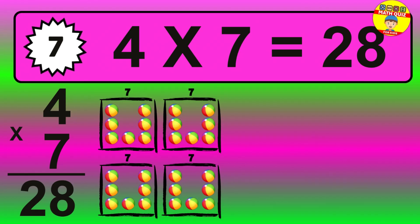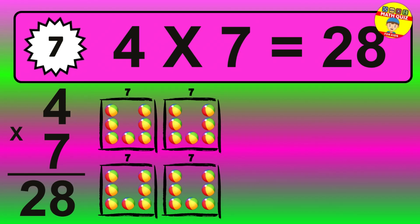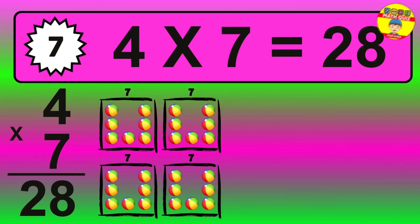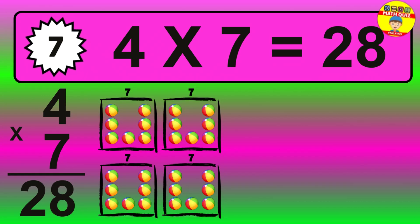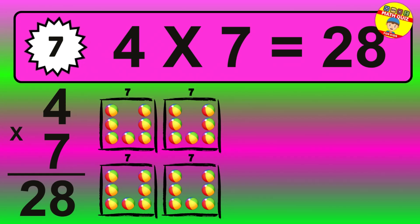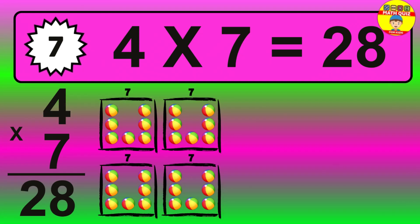Question 7. 4 times 7 equals what? The answer is 4 times 7 is 28. To calculate, we have 4 groups with 7 balls each one. So, how many balls do we have? 28 balls.